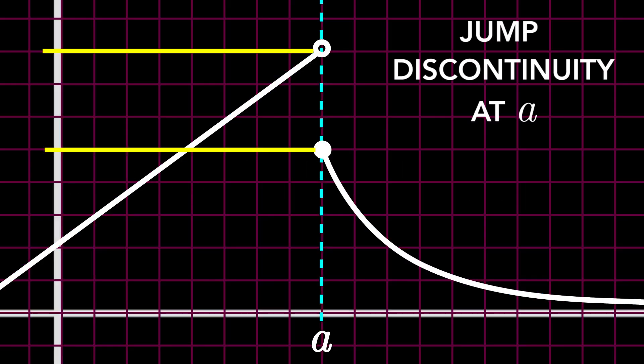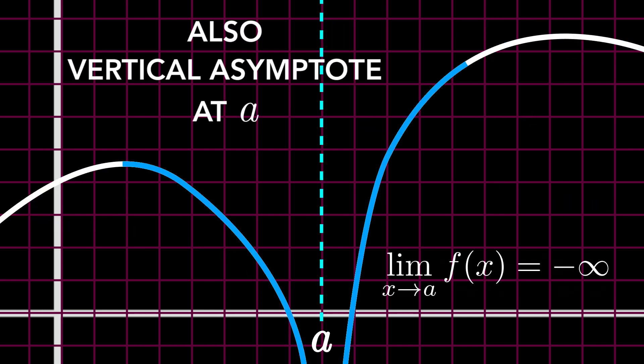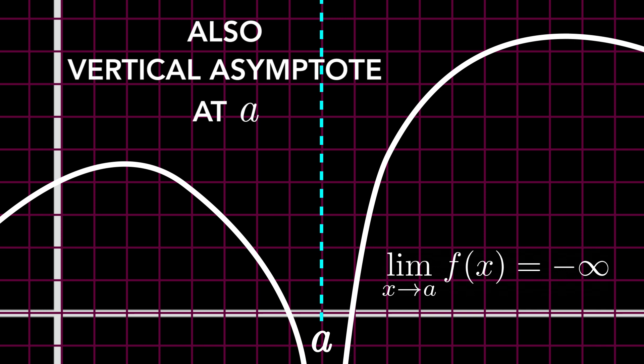Now, some counter examples. Here, the limit does not exist. Here, the limit also does not exist. Here, you could say that it tends to negative infinity, but since that's not a real number, the limit does not exist.